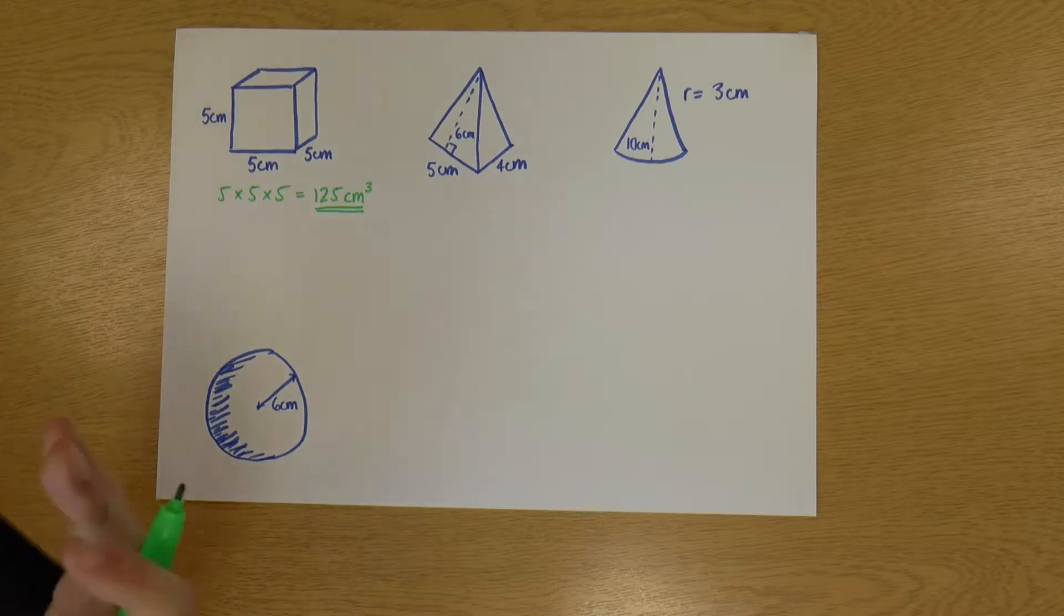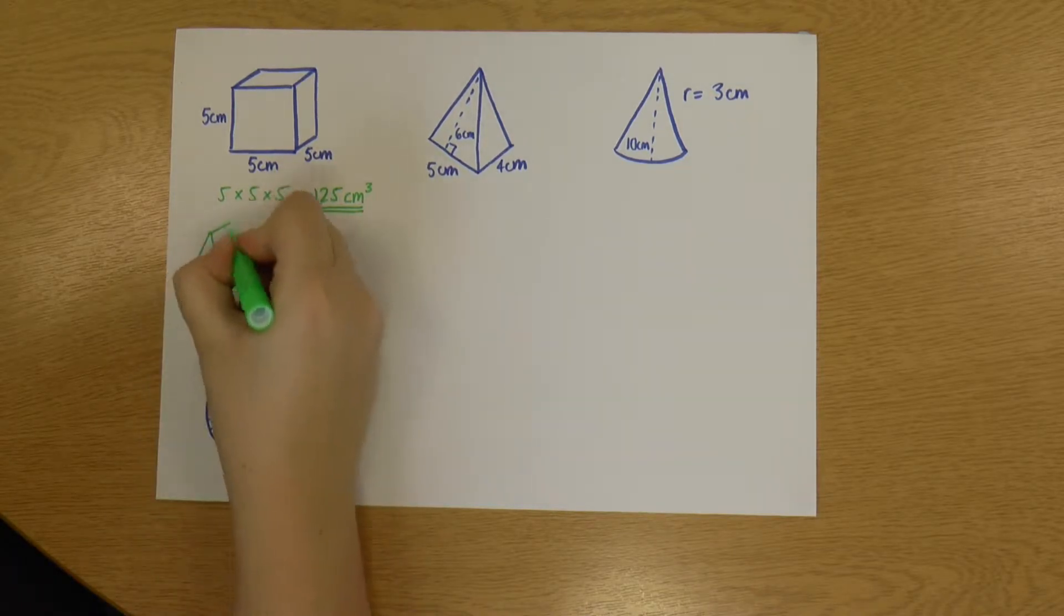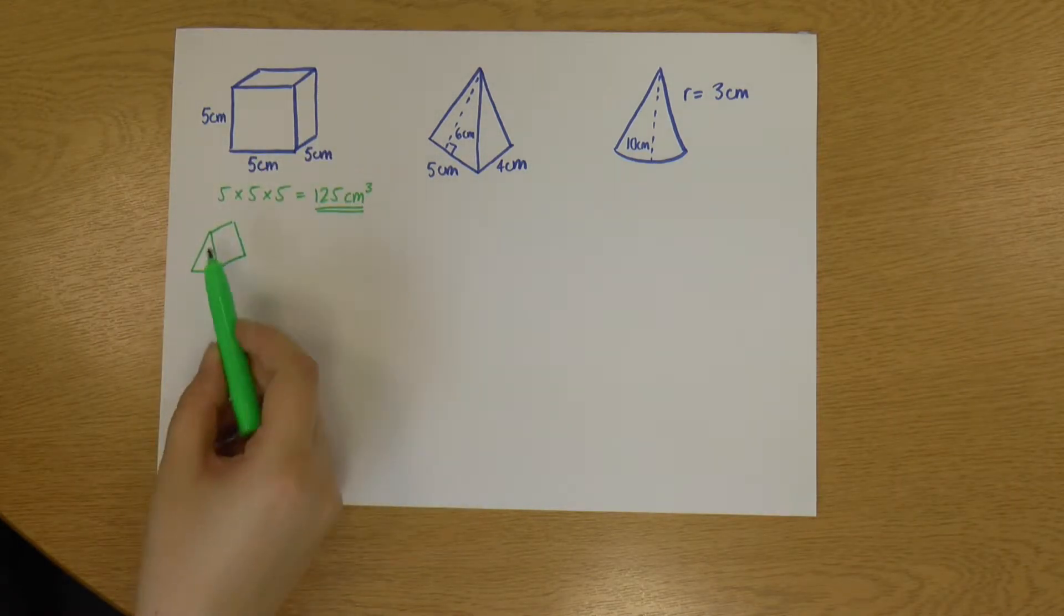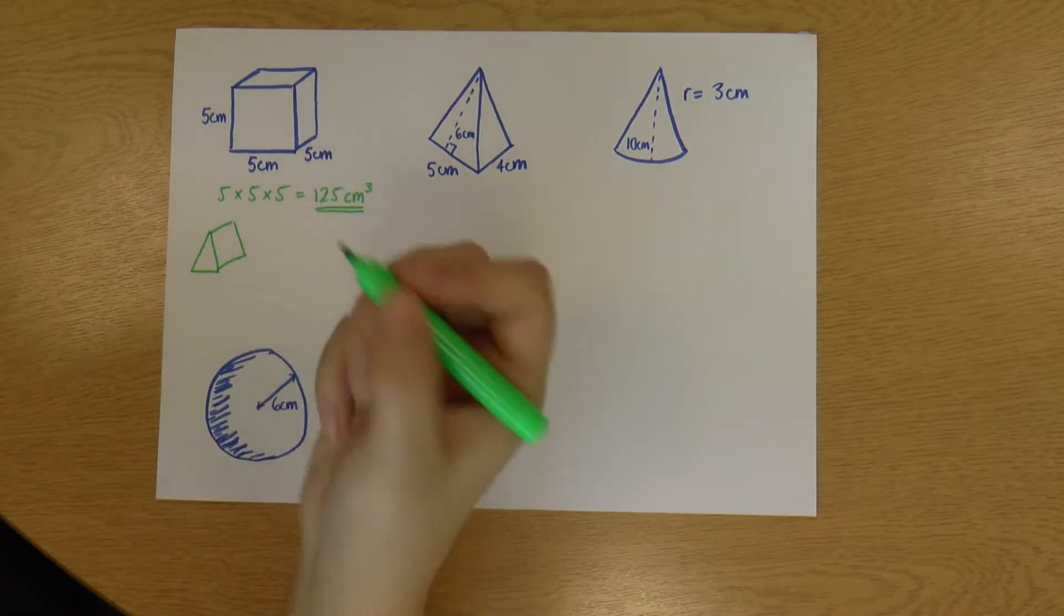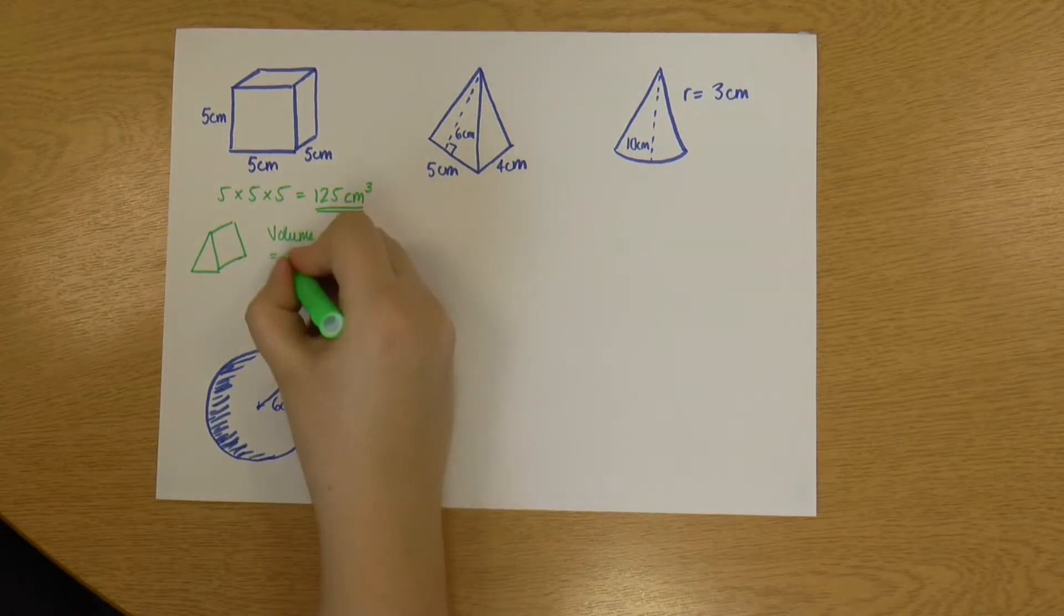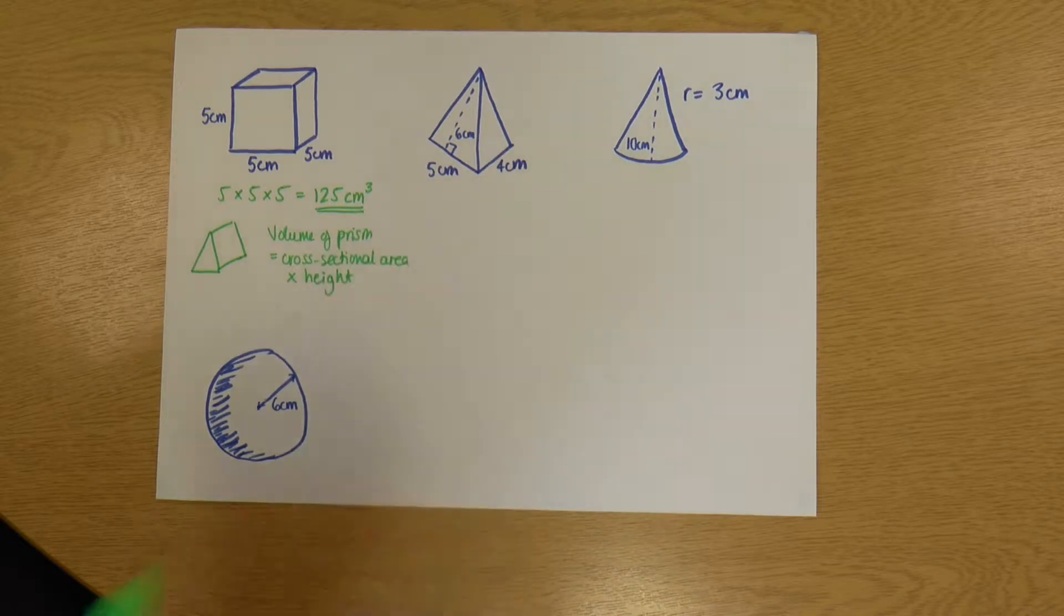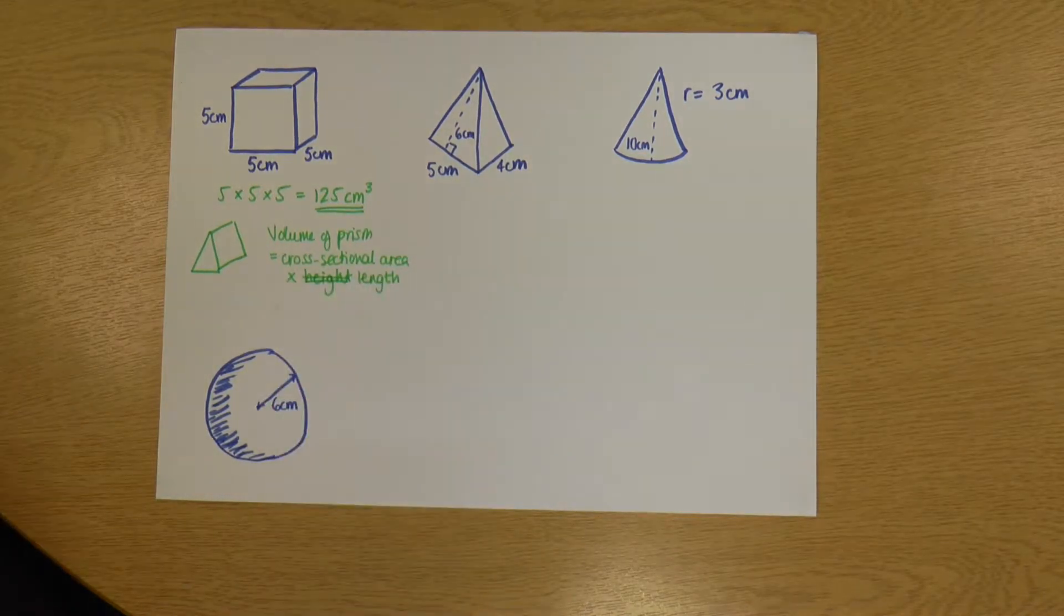Another shape I could have, actually the rule works with this one as well, but if I had for example a triangular prism. So essentially a cube or cuboid is a square or rectangular prism. So this is a triangular prism. We can use the same rules for both really. So the volume of a prism is the cross-sectional area multiplied by the height. So it's the cross-sectional area multiplied by the length.